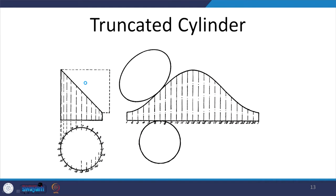What if we have to draw truncated solids? We have already seen sections of solids. What happens if a solid is cut and we have to draw the surface of that solid — because majority of the machinery parts are truncated solids, cut by planes or intersected with different solids. The fundamental remains the same and the methodology for arriving at the true shape comes from what we have already seen in the true shape of the section.